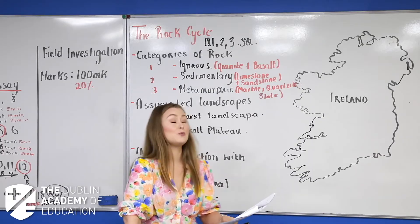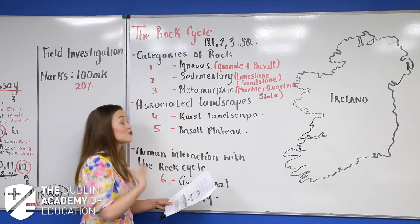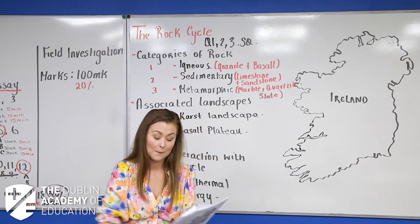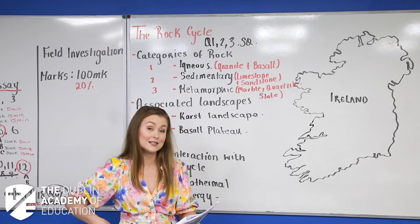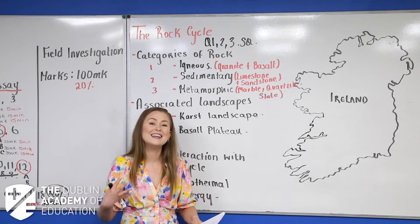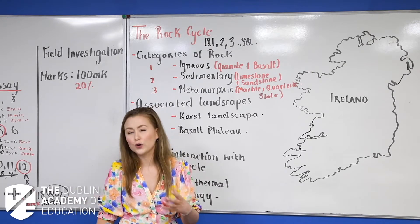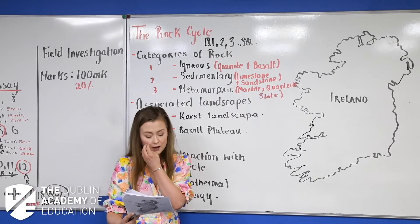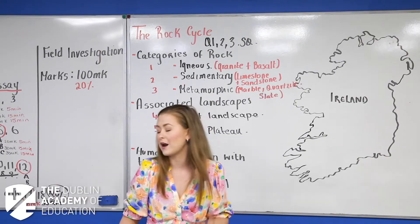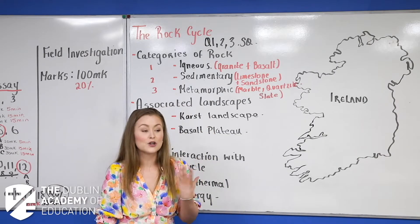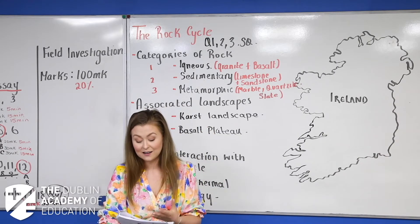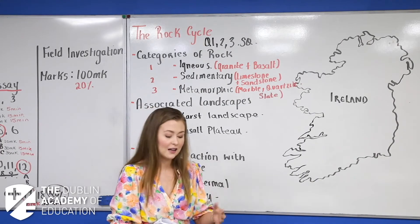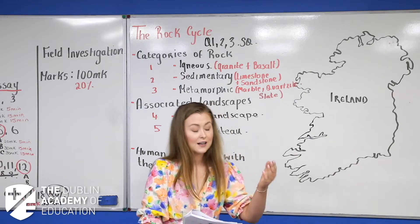The second category is our sedimentary rocks. Sedimentary rocks are formed as a result of compression and compaction — highlight those two words — and beside them write 'lithification,' which is another word for compression and compaction. This happens to the remains of plants, animals, rocks, whatever it may be. Examples include limestone, sandstone, shale, and coal.